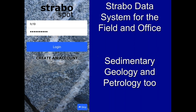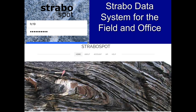There's a Strabo data system for the field, and also an office version — basically a web page where you can query, import, and export your data. It's very flexible. You get an account and it's a mobile app. We're also starting to work with sedimentary geology, petrology, and microstructures to expand the system. The website is strabospot.org.